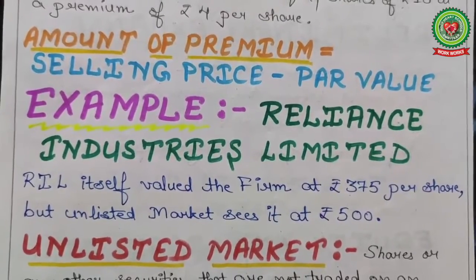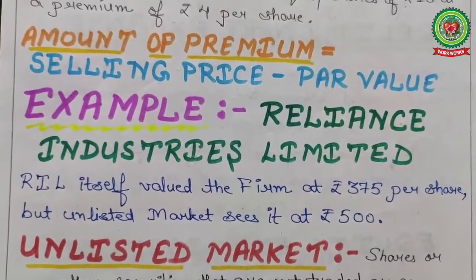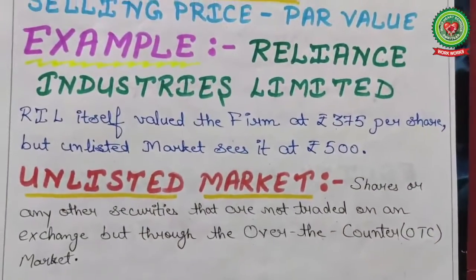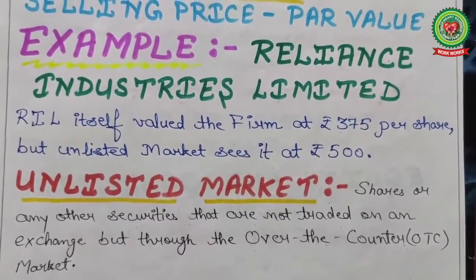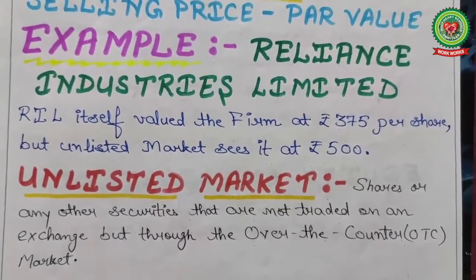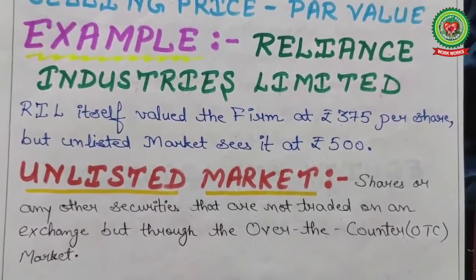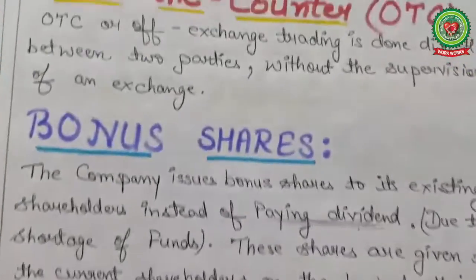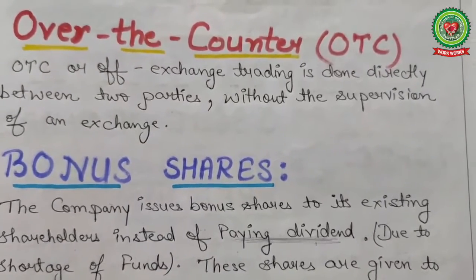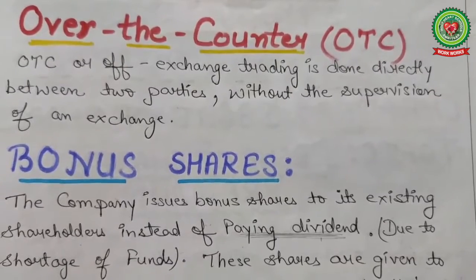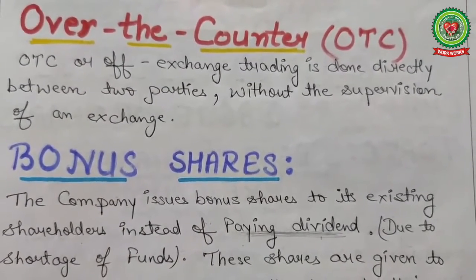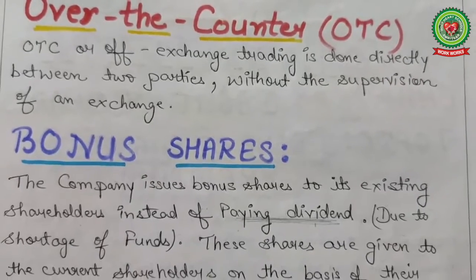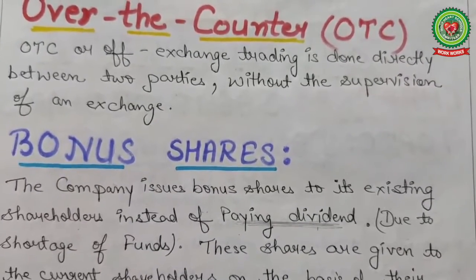Now a few terms related to this: Unlisted market shares or any other securities that are not listed on any exchange but traded through the over-the-counter market — when not listed on BSE or NSE, it is considered as OTC. OTC or off-exchange trading is done directly between two parties without the supervision of an exchange. No stock exchange, no national stock exchange — just over-the-counter dealing between two parties with no supervisory body.